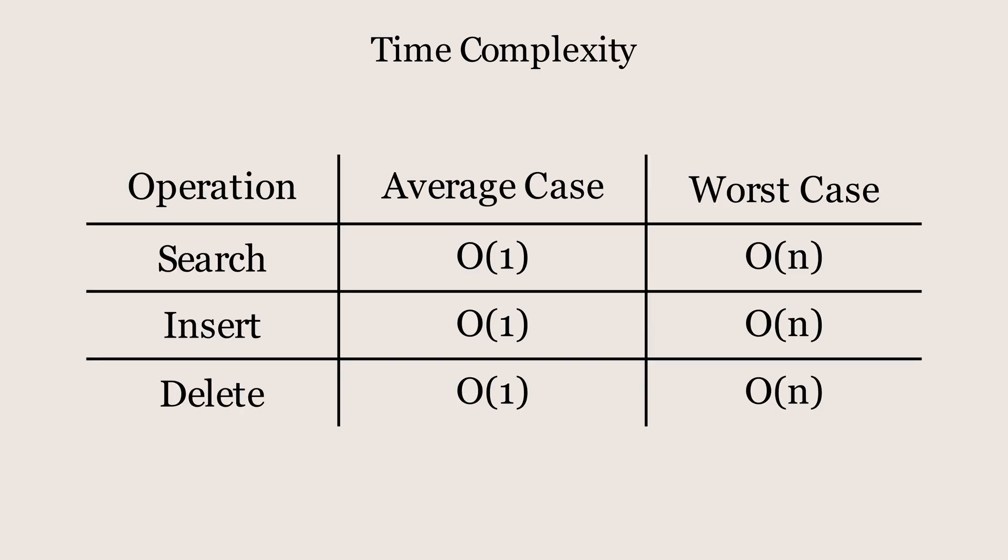The time complexity of all operations in a hash table is constant time on average. However, in the worst case, it can degrade to linear time if there are too many collisions. But this scenario is rare with a good hash function and a well-designed table. Check out the GitHub link in the description for a simple Python implementation of this.